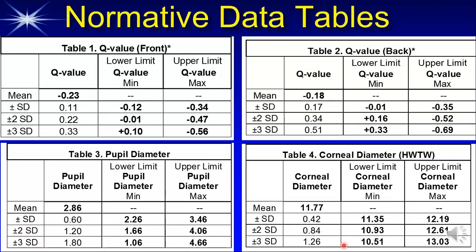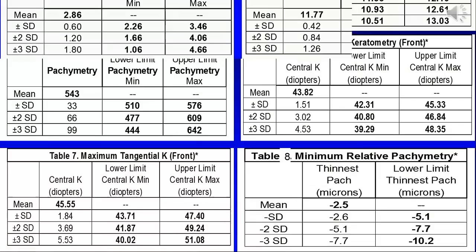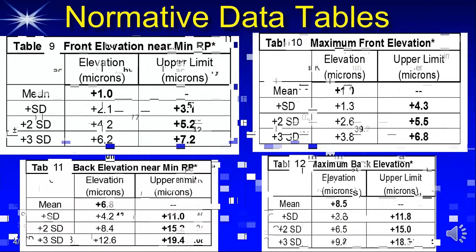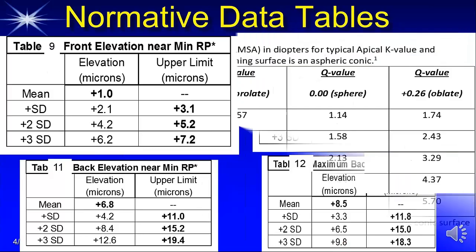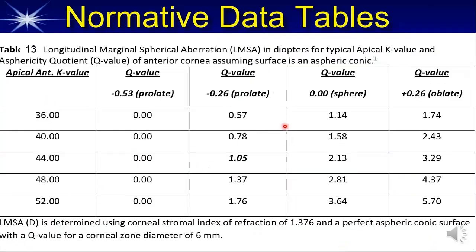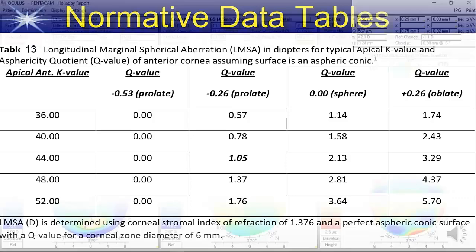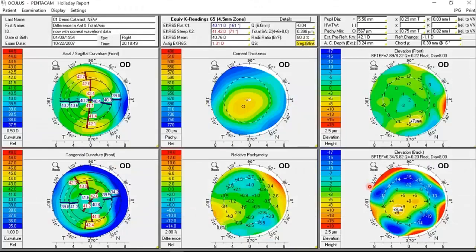There are tables in the presentation and interpretation guidelines that provide normative values, but you don't need to memorize them because the color maps take that into account automatically. Green means normal, red means abnormal, and yellow means suspicious. There is also a table for prolate corneas showing spherical aberration of the cornea, but again the color codes handle that automatically. Let's take a look at a specific example.